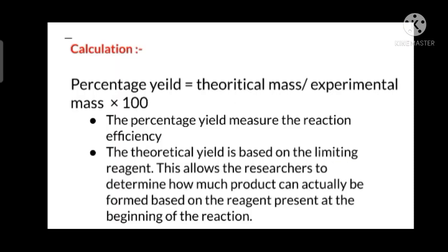Now comes the calculation part. Here we have to calculate the percentage yield of the reaction. The formula is theoretical mass divided by the experimental mass into 100. We have to calculate percentage yield because it measures the reaction's efficiency. The theoretical yield is based on the limiting reagent.